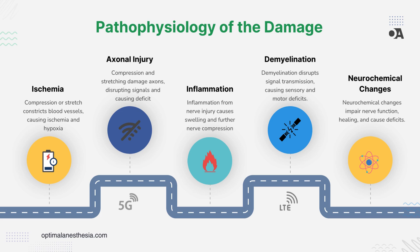We'll explore the pathophysiology behind these injuries, including how they happen and why they matter. During surgery, if a nerve gets compressed or stretched, the blood vessels that supply it might get pinched off. This leads to ischemia — reduced blood flow — and the nerve gets less oxygen and nutrients, a condition known as hypoxia. Nerves need a constant supply of oxygen to function properly. Without it, they start to suffer and can quickly become damaged or even die.